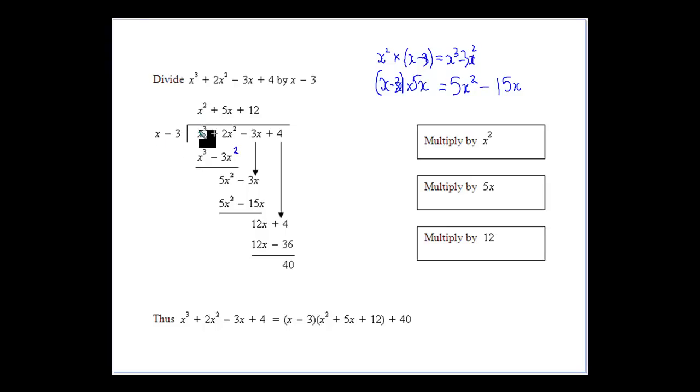So x times x squared would be x cubed. So if we're going to multiply x by x squared to give us x cubed, we've got to multiply x squared by minus 3 to give us the x cubed minus 3x squared.